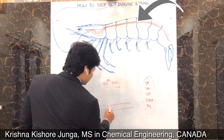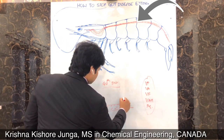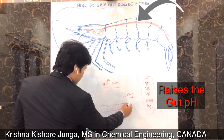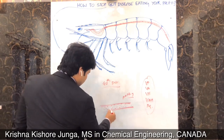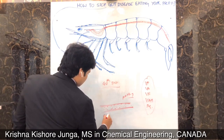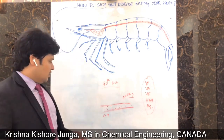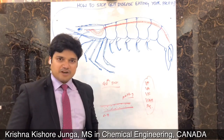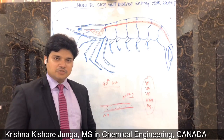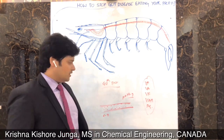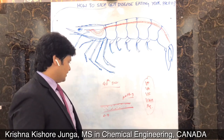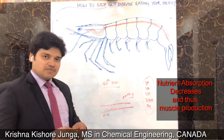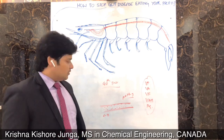Once inside the gut, the first thing they do is increase the gut pH to above 8 to 9. The normal pH of the gut should be around 5 to 7 for normal digestion. At the elevated pH, the digestive system malfunctions and nutrient absorption of the animal decreases.